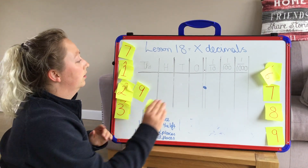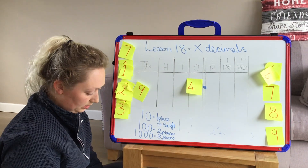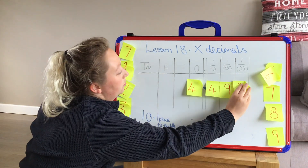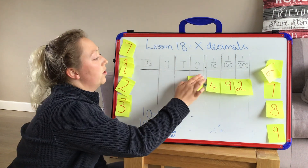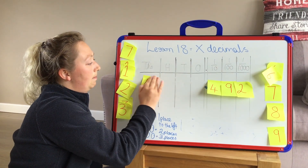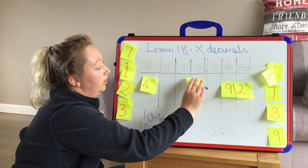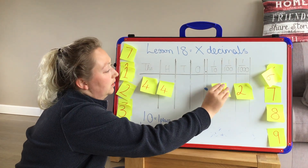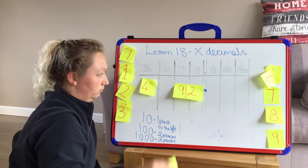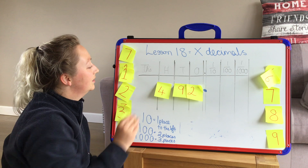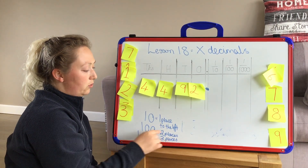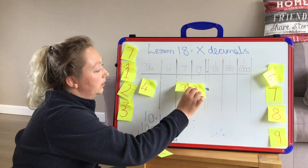Let's do 4.492 times by 1,000. We're moving it three places to the left. Moving the 4 three places, the 4 tenths three places, the 9 hundredths three places, and the 2 thousandths three places. So our answer equals 4,492. We are not moving the decimal point — we are moving the values.